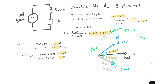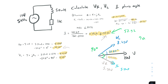It really is that simple. Just remember the steps: first find the impedance, then calculate the current, and from there apply Ohm's law — V = I × R for the resistor and V = I × XL for the inductor. That's it. Thanks for watching!